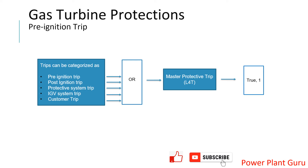In this video we will discuss only the pre-ignition trip, which is the first one mentioned. There are other trips as well — pre-ignition, post-ignition, protective system, IGV, and customer trips — and any one of these being true satisfies an OR condition. If any one of them is true, it activates the master protective trip, which transitions from zero to one and causes the GT to trip.